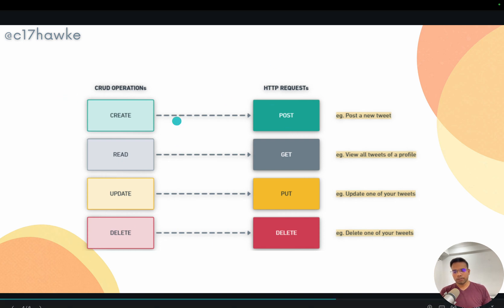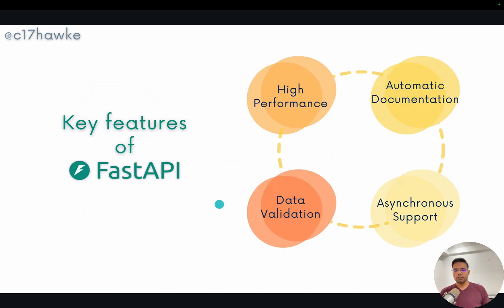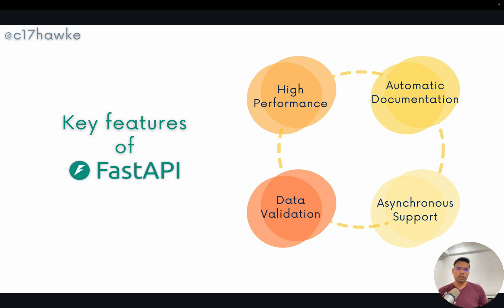We will be building a simple application like this using FastAPI, which will make it much clearer. Let's also look at the key features of FastAPI. First, it is high performance. Second, it has automatic documentation built in — if you want to understand what your input and output should look like, that's available out of the box. Third, it has asynchronous support — for example, if you want to download 100 images, while the first image is downloading you don't want to wait; you can send the next request immediately.